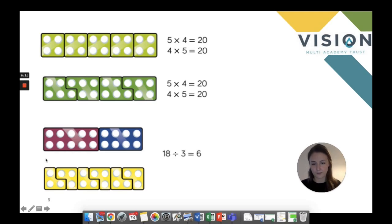Just loads of other examples there. In this bottom one, we have 18 being divided by three. So little threes here of the numicon, creating 18 in total. And then the children can count how many groups they have.